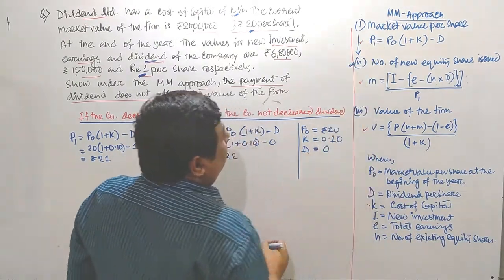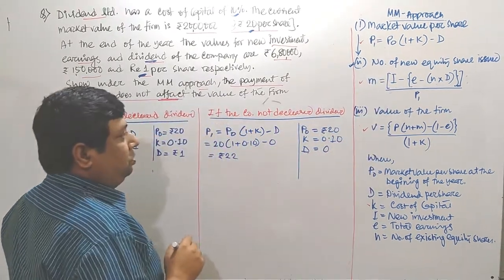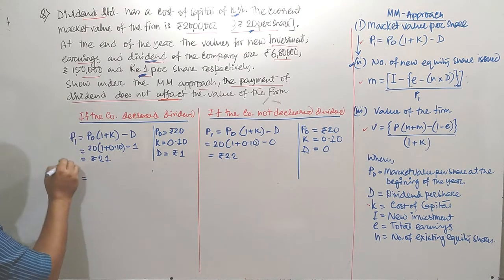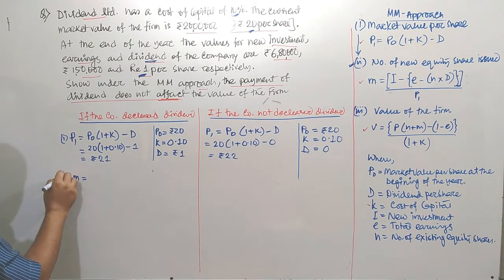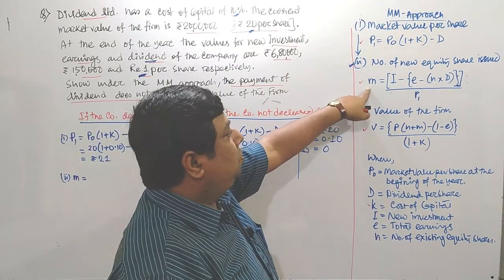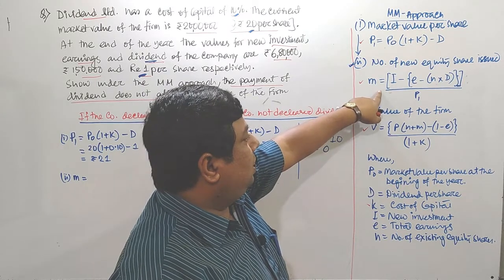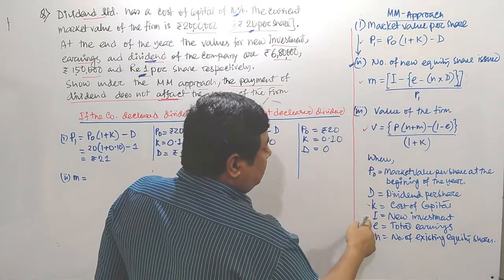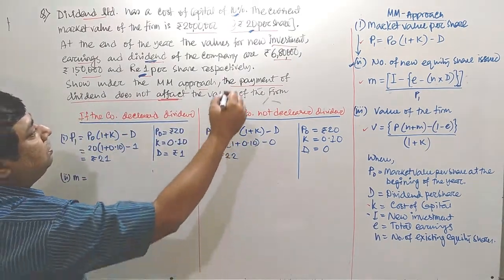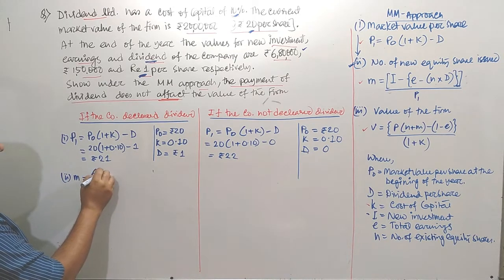Now we move to the second stage — we calculate how many new equity shares are required to be issued, denoted as M. The formula involves I (new investment) minus E (total earnings) minus N times D, all divided by P1. The amount of new investment required is Rs. 6,80,000.